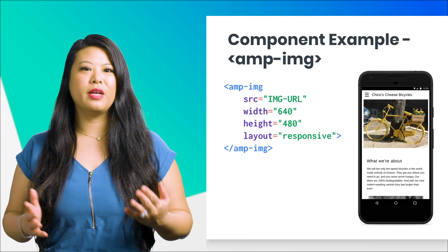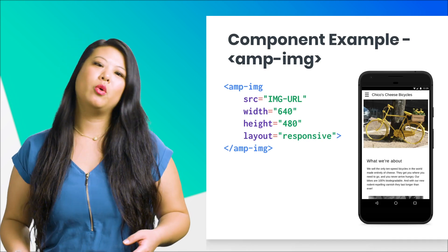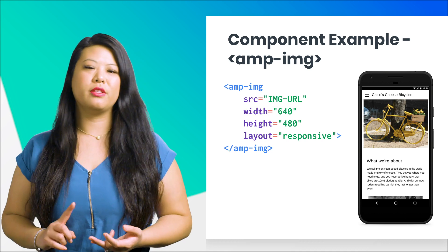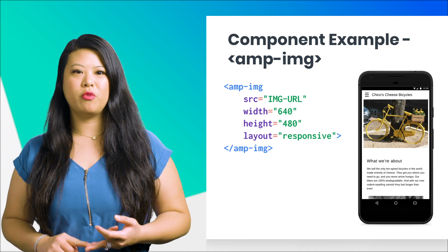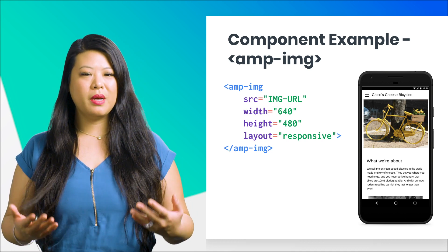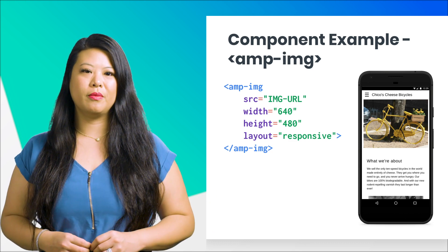Three components we might want to use in our site are the AMP image tag, AMP Twitter tag, and the AMP YouTube tag. Here's an example of the AMP image tag. AMP requires us to specify the dimensions of the image and the source URL for the image. Specifying that the layout is responsive will also make the image fill the parent container.